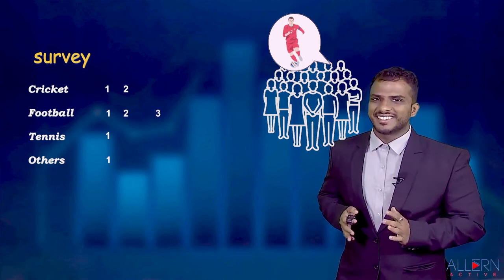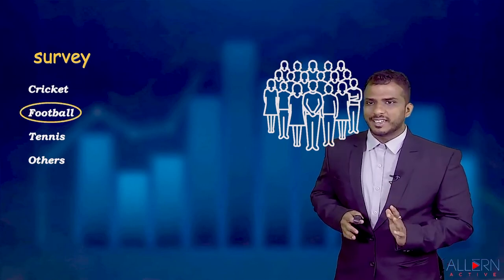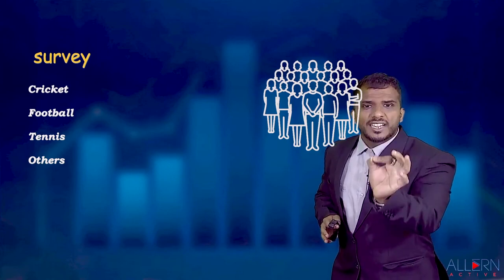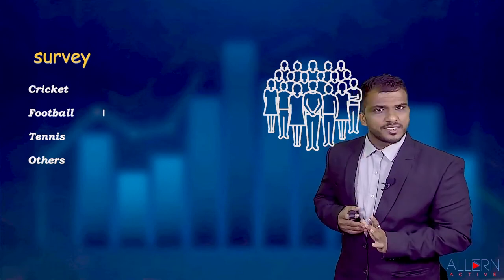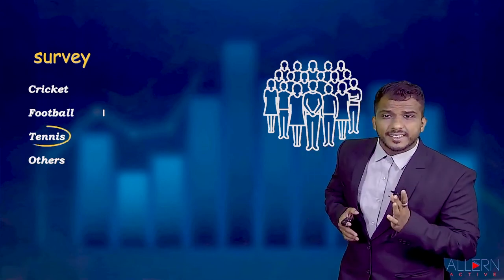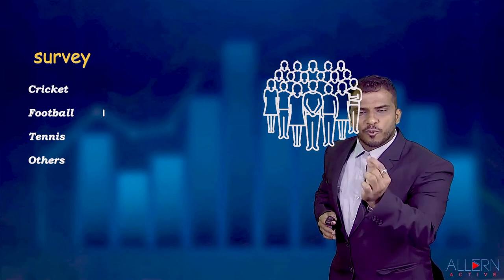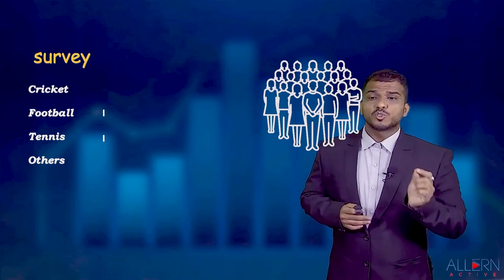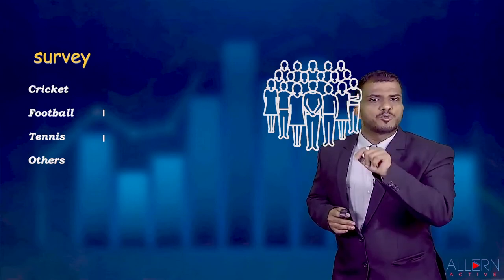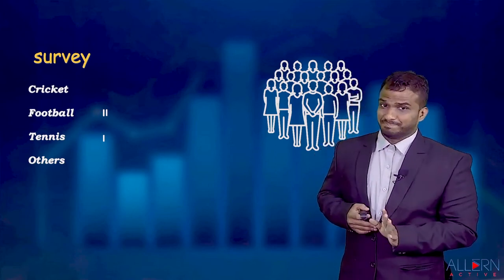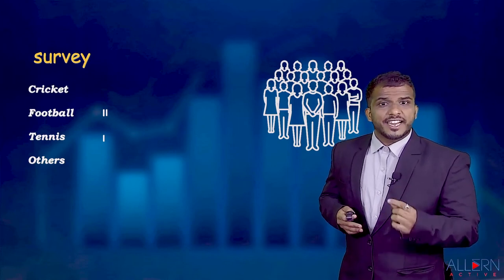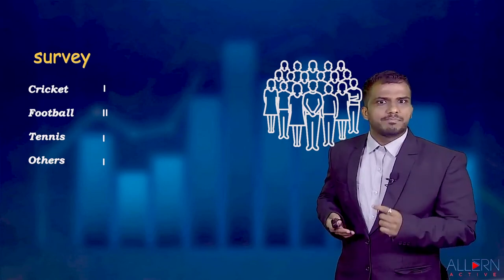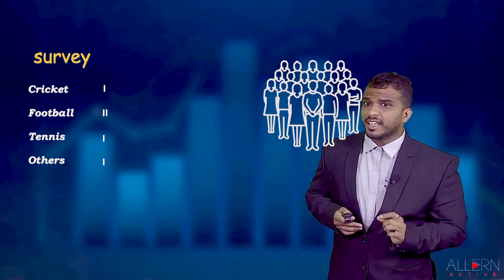So we innovate by using a very beautiful method of recording this data. For the first person who likes football, we put a simple vertical bar corresponding to football, as you can see on the screen. When the next person says tennis, we put a vertical bar for tennis. For the next football response, instead of writing the number two, we put one more vertical bar. Similarly, one bar for cricket, one for 'others', and one more for football.